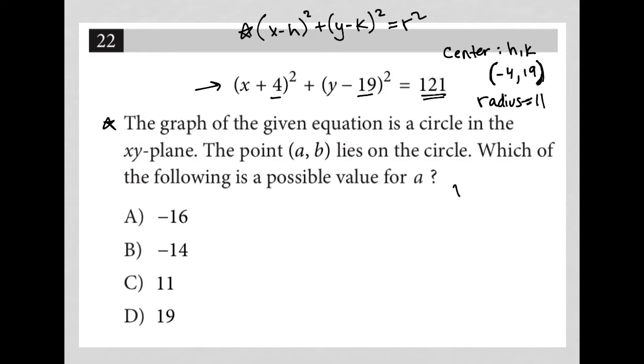Well, this would be a great question for Desmos, right? You could technically just enter this equation into Desmos. It would graph the circle for you. And then you're looking at, so again, a here is in the x position, right? x comma y for ordered pair for a point on a graph.